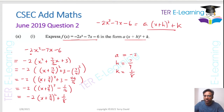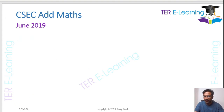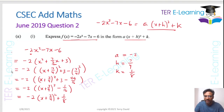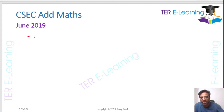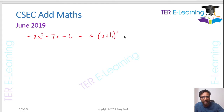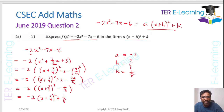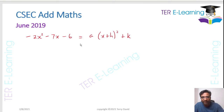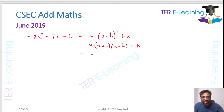This is one method of working this problem. Some students prefer it, but some have a problem with it, so let me give you an alternative method. We have minus 2x squared minus 7x minus 6, and I'm going to write it in the form a(x + h) squared plus k. What I'm going to do is expand the right-hand side, so this is a multiplied by (x + h) squared, which is (x + h)(x + h), plus k.